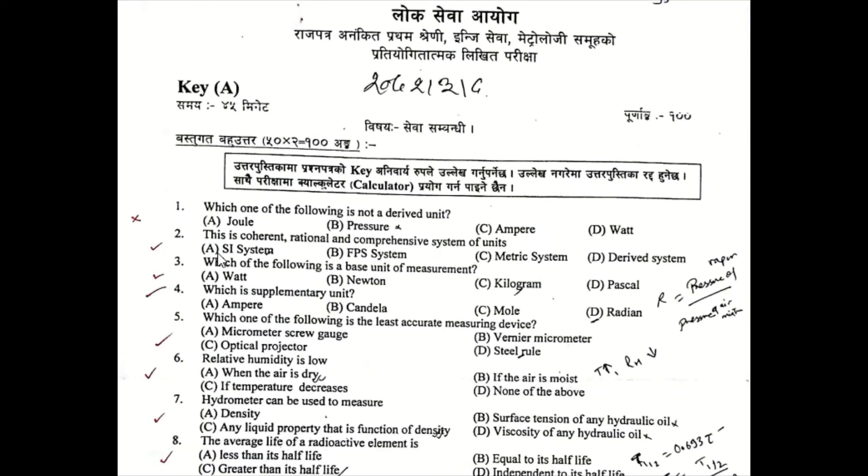Question Number 2: This is coherent, rational and comprehensive system of units. Options: A) SI system, B) FPS system, C) Metric system, D) Derived system.